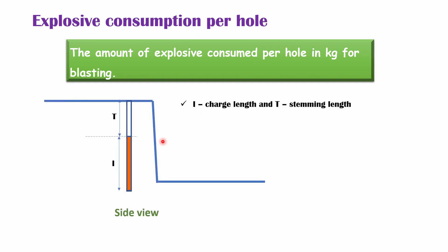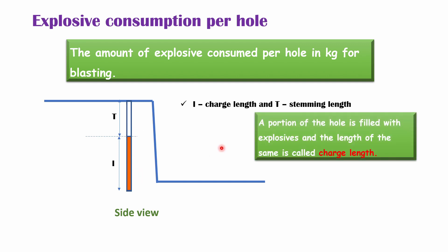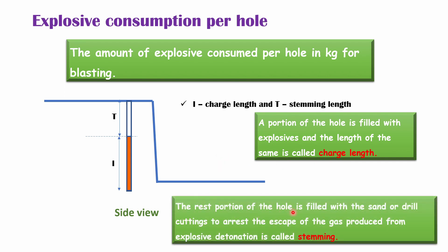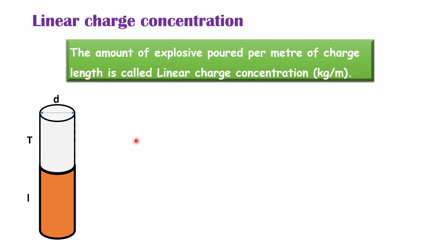Suppose this is an open cast bench with a blast hole. The charge length 'I' is the portion of the hole filled with explosives. The stemming length 'T' is the rest of the hole filled with sand or drill cuttings to prevent escape of gas produced from explosive detonation. The amount of explosive provided in the charge length is called the explosive consumption per hole. The linear charge concentration is the amount of explosive per meter of charge length.